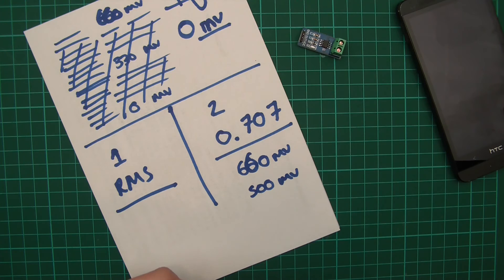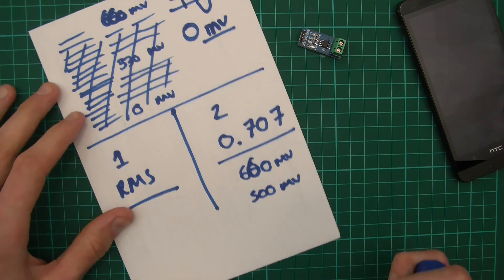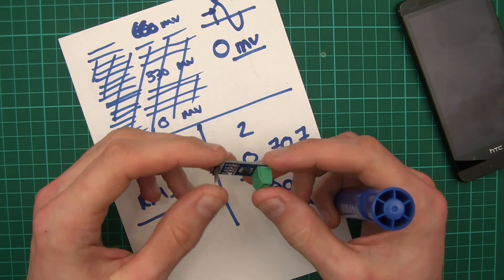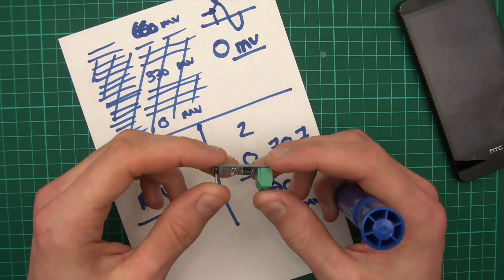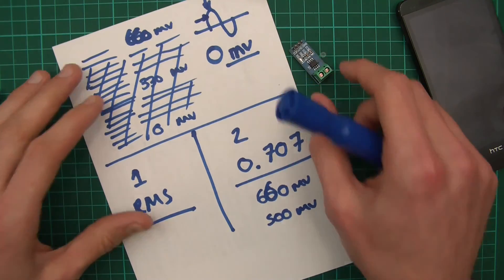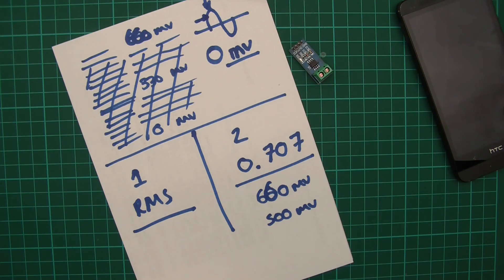And as far as theory is concerned, that is how to measure AC current using one of these ACS712 Hall Effect sensors. So in the next video I'll actually show you this thing for real with code and all that. I hope you enjoyed the video — thanks for watching!